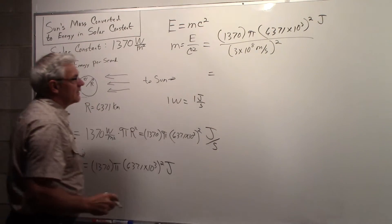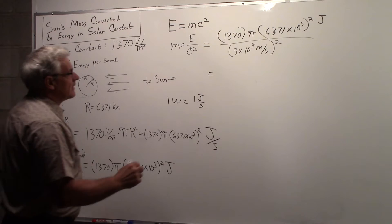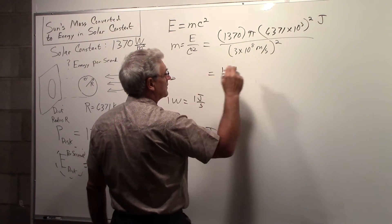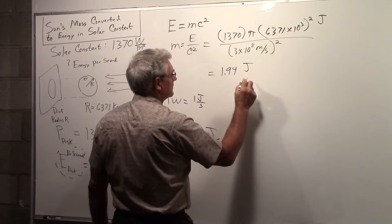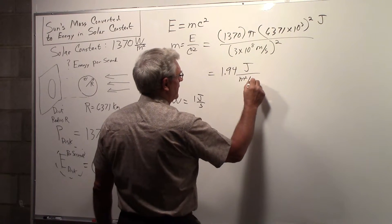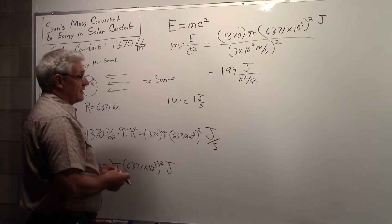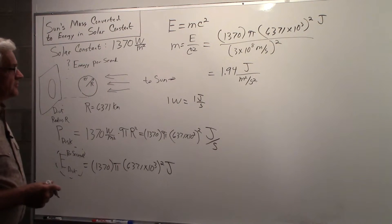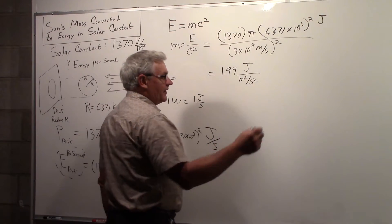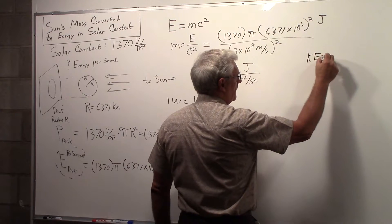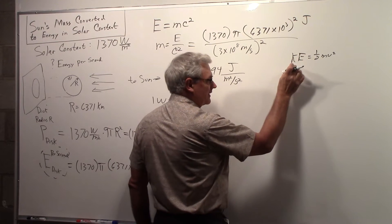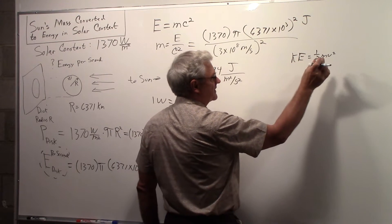So if you work this out, you'll wind up with approximately 1.94 joules per meter squared per second squared. And you know that a joule is an energy. And if you think of kinetic energy, one half mv squared, you can see from this that the kinetic energy measured in joules is equal to a mass times a velocity squared, which is meters per second squared.